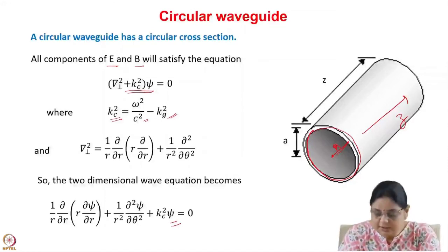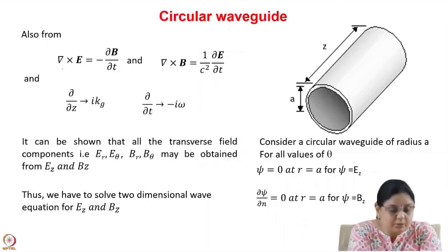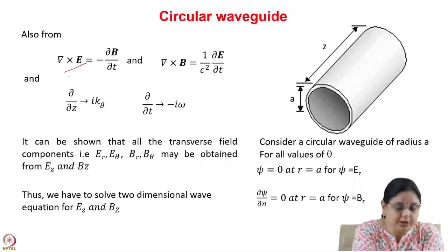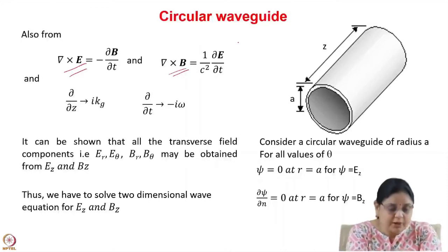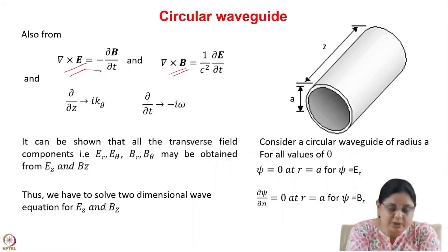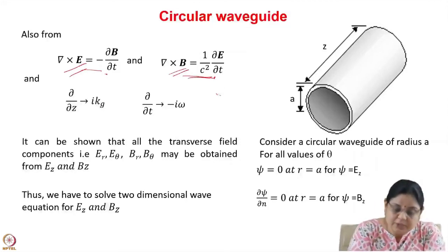Here psi can be either Ez or Bz. You need to solve only for Ez or Bz. From Maxwell's equations, curl of E equals minus del B by del t and curl of B equals 1/c squared del E by del t. The exponential variation is e to the power of i kg z minus omega t.